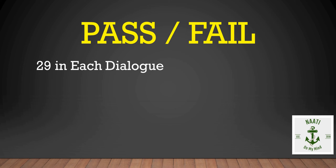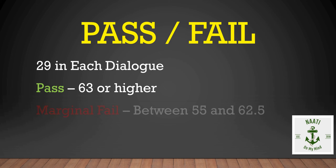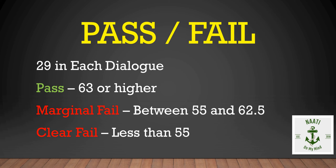I'm going to show you some scenarios and then we will determine whether the candidate has passed or failed the exam. You need 29 in each dialogue and a total of 63 or more to pass. Marginal fail is when a candidate scores between 55 and 62.5 — it is mentioned as marginal fail on the report card. It is a clear fail if the candidate scored less than 55, or scored less than 29 in any one dialogue. Marginal fail applies if he scored 29 in each dialogue but his total did not reach 63.